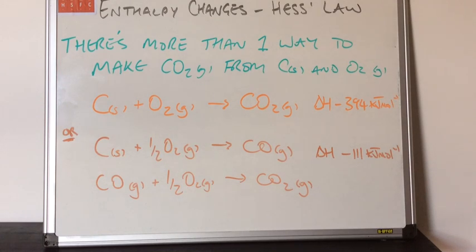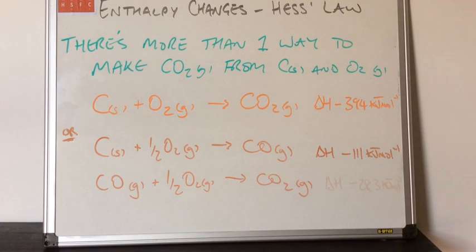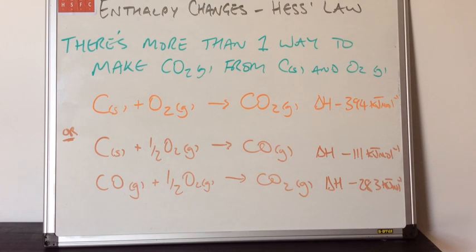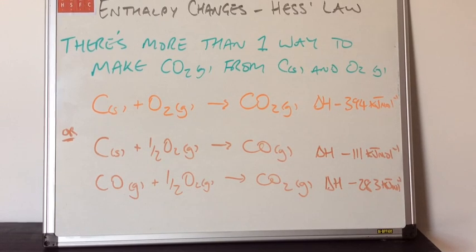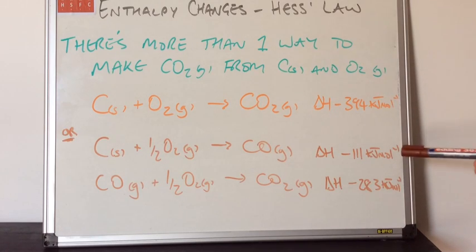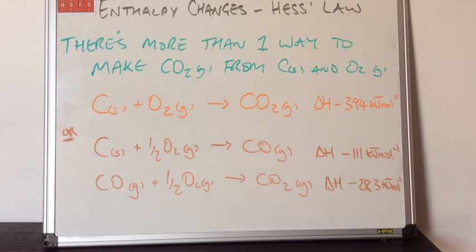The enthalpy change for the first part of the brown route is minus 111 kilojoules per mole — you might want to think now about what the second one could be. The enthalpy change for the second part of the brown route is minus 283 kilojoules per mole.